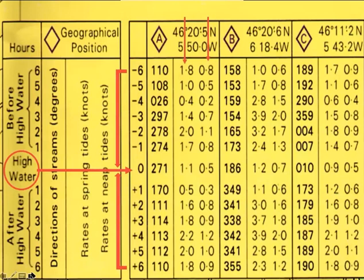For each hour, taking minus six as an example, the information we have is the direction of flow of the tide as a true bearing, the speed of flow on the spring tide, and on a neap tide. At minus six, the tide is flowing 110 degrees true at 1.8 nautical miles per hour on springs, and 0.8 on neaps.